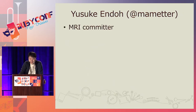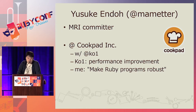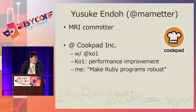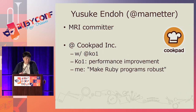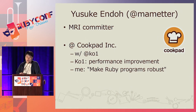I'm a committer of Matz Ruby Interpreter, MRI, and I'll show my contribution later. I'm now working at Cookpad, a company providing a cooking recipe sharing service. Cookpad has employed two full-time MRI committers, Koichi Sasada and me. Cookpad would like to contribute to Ruby 3.0. Koichi improves performance for Ruby 3 by 3, three times faster than 2.0. My aspiration is to make Ruby programs robust by some approaches, including contribution to design of the Ruby 3 type system and improvement of code coverage measurement.